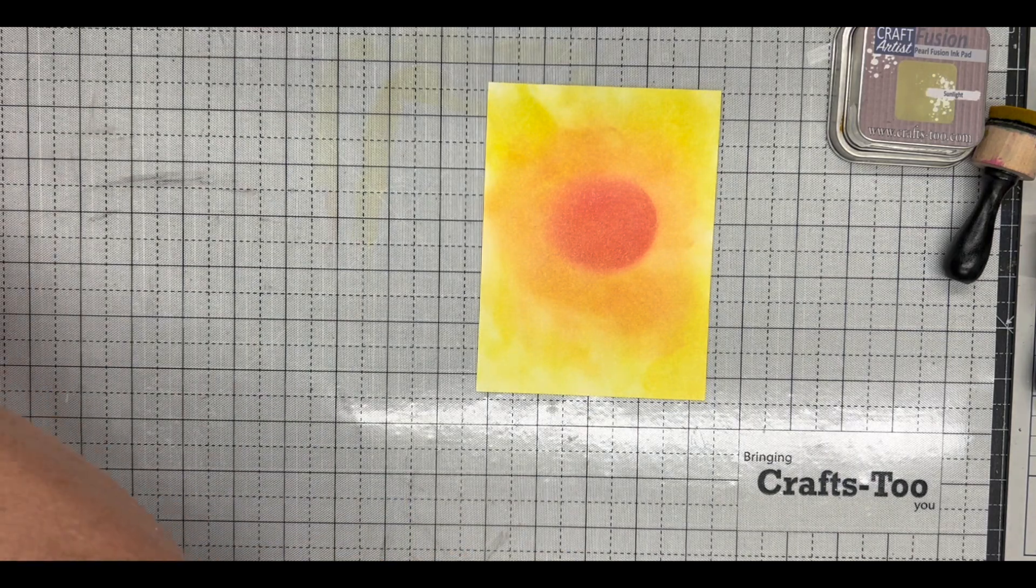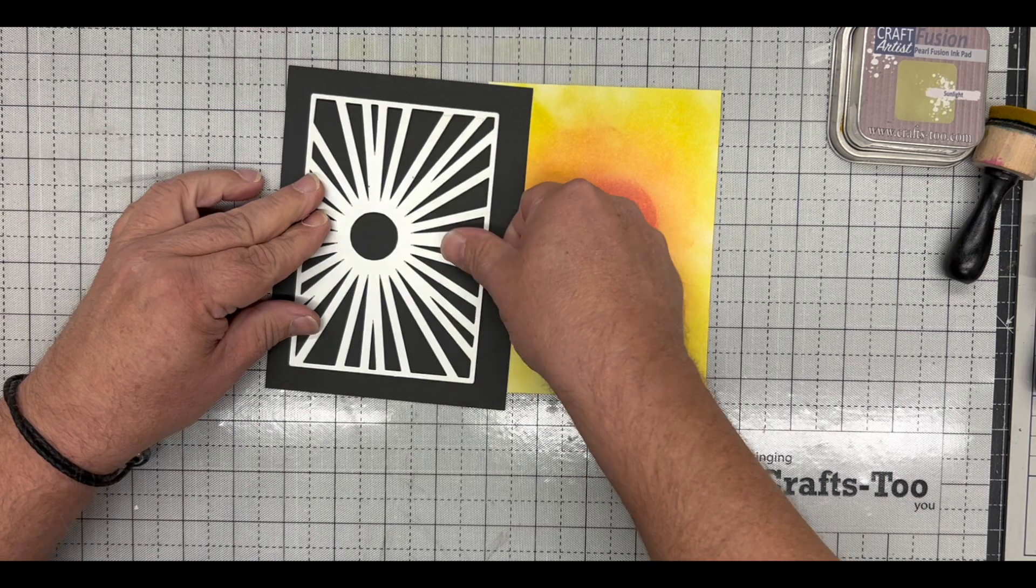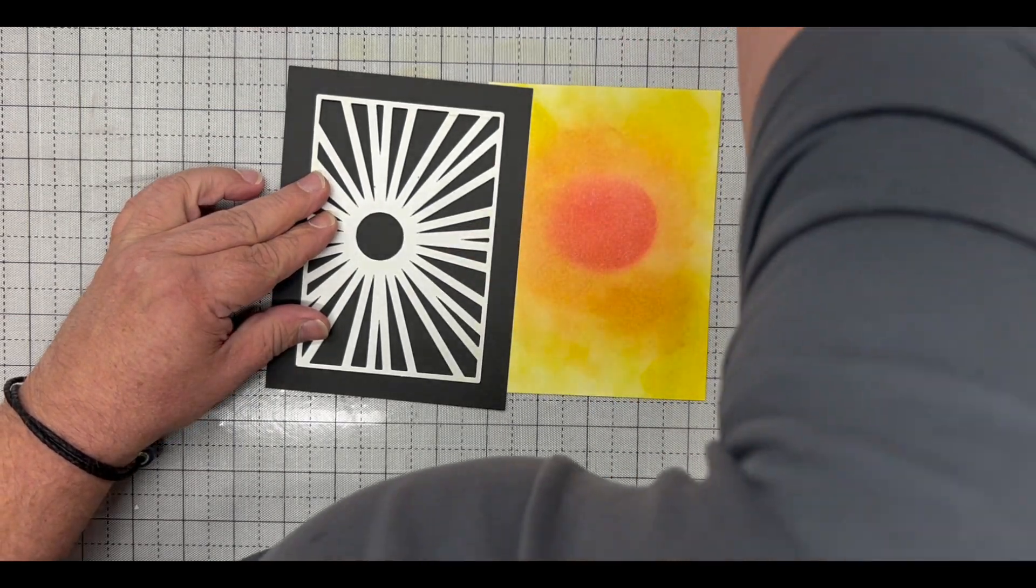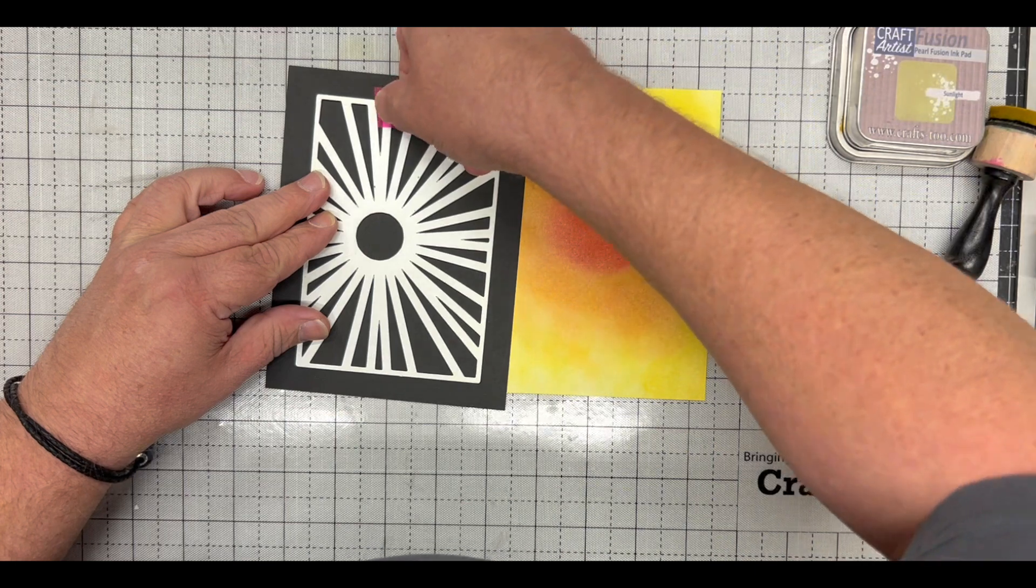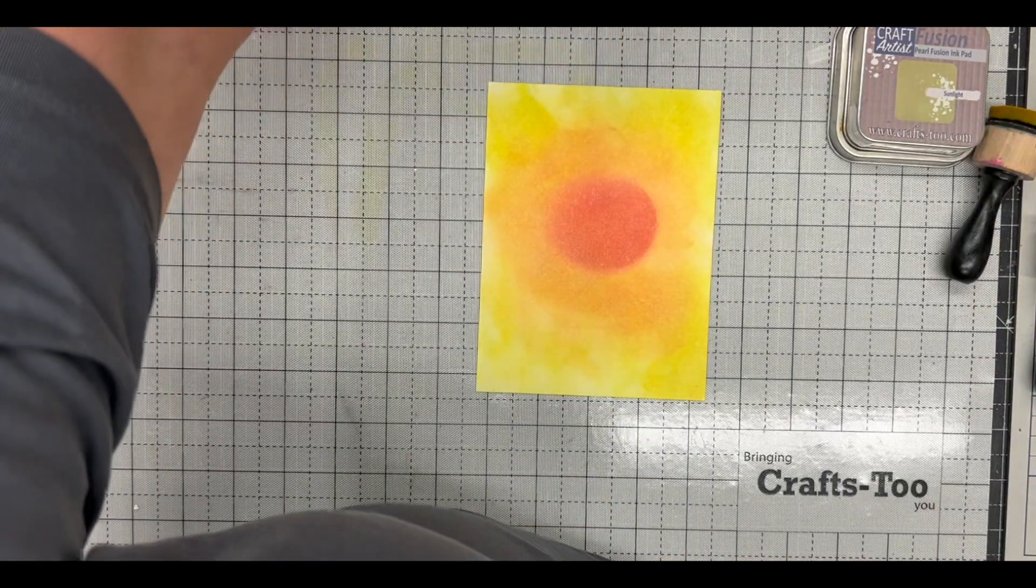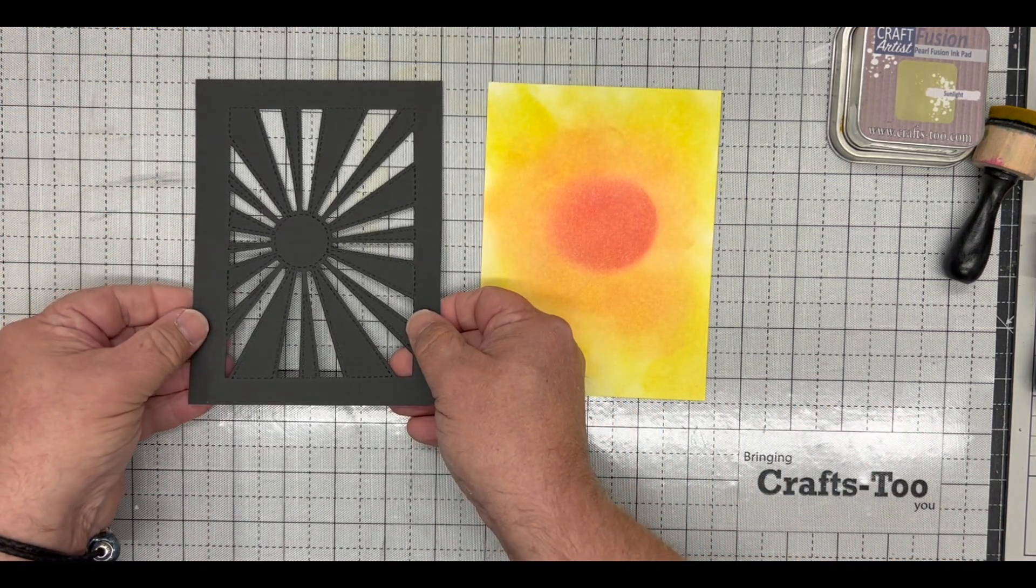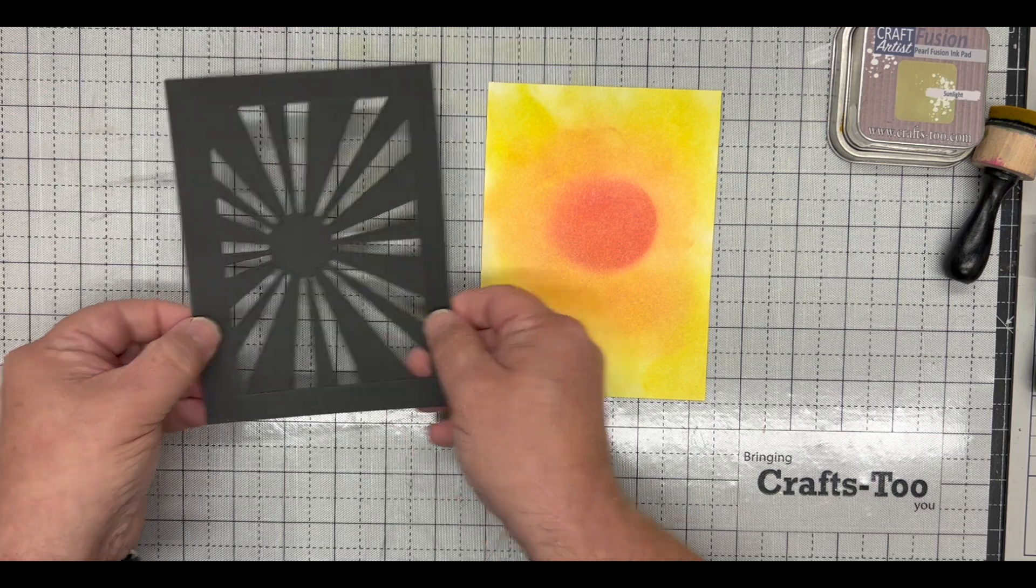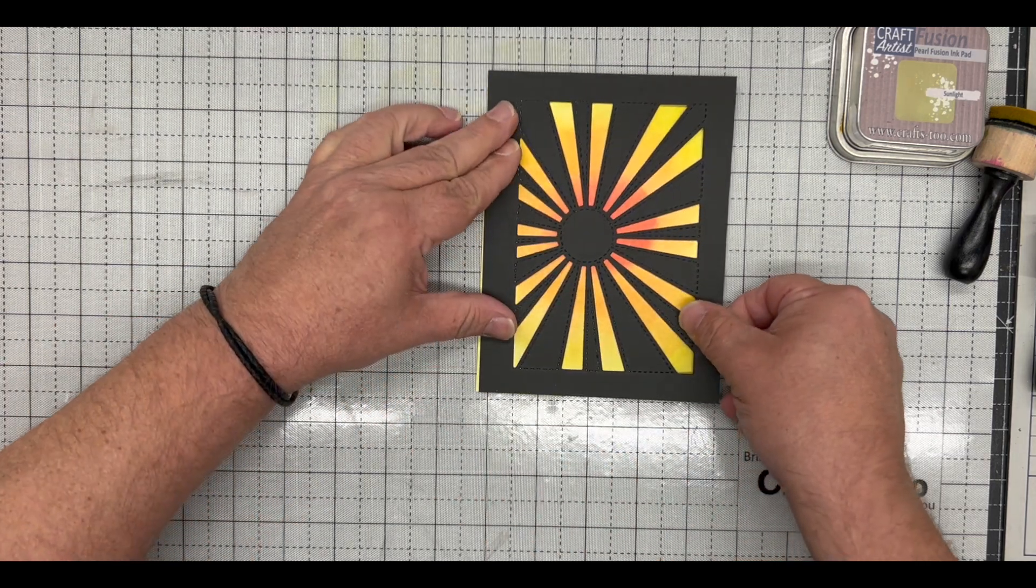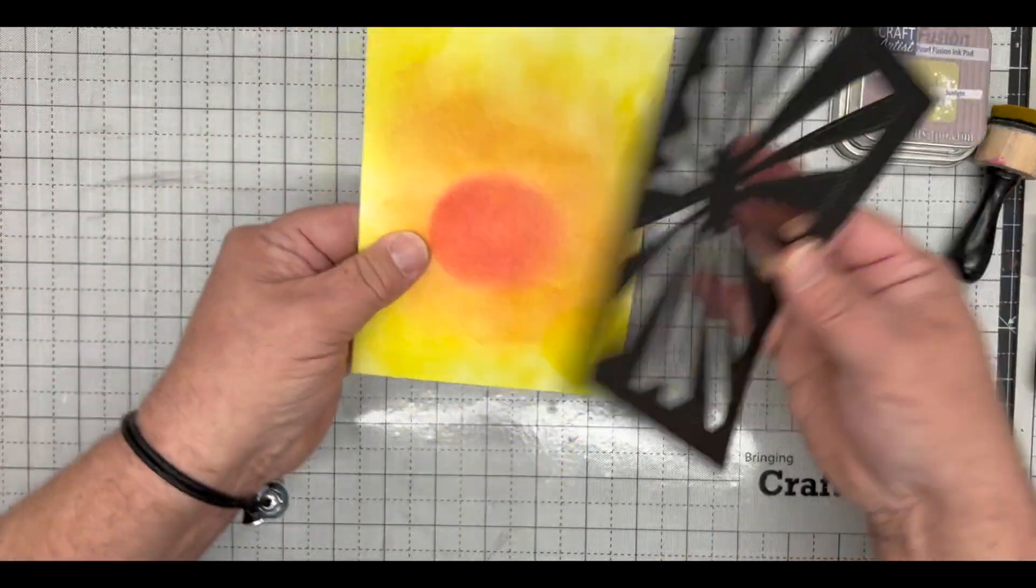Next I'm going to take a piece of black card in exactly the same size, take the sun ray, place that into the middle, tape that down, and we're simply going to run through that through our die cutting machine and cut it. That will give us this perfect cut just here. If you see, if I place that onto our finished piece, all those colors suddenly magically blend and it looks right. So you move it around until we're happy.